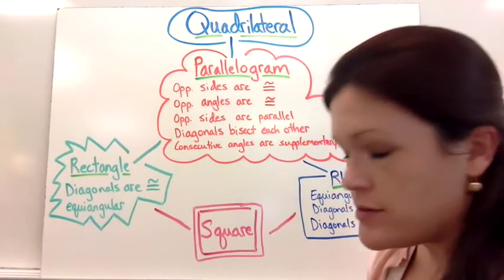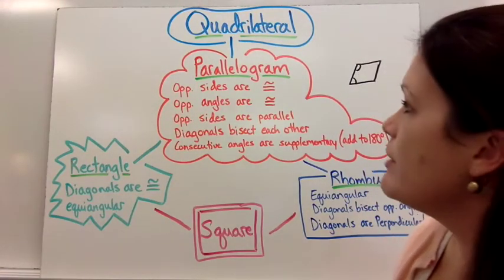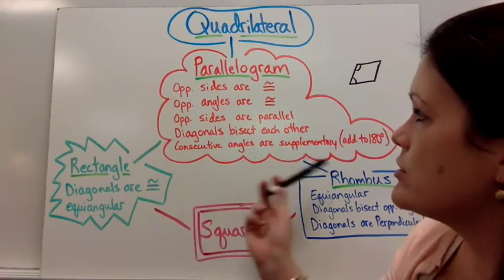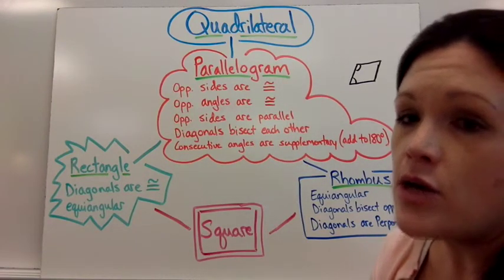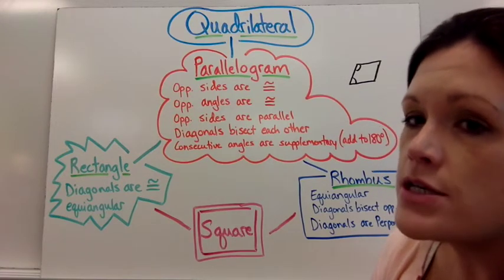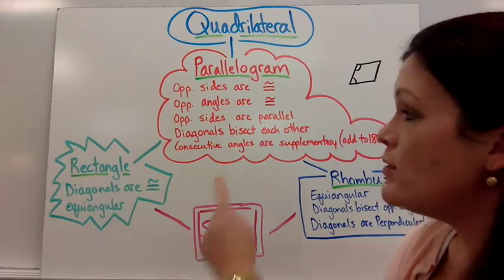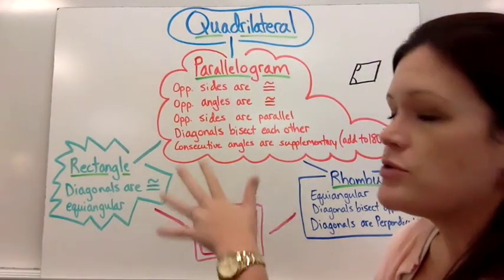And then we branch off into some more specific quadrilaterals. So a quadrilateral is considered a parallelogram if it has these characteristics. We're going to talk in another video about how to prove that a quadrilateral is a parallelogram. But for now we're just going over the characteristics of a parallelogram. So if you know it's a parallelogram, you know that all of these things would be possible to help you solve problems.